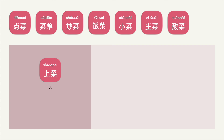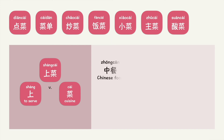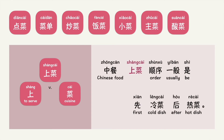上菜. 上 has many meanings — you probably learned 上 translated as on top, upon, above, upper, to get on to, to go up, or to attend. However, in this word it's best translated as to serve. 菜 means cuisine. Put into context, you can say: 中餐上菜顺序一般是先冷菜后热菜。 — To serve cuisine. What do you think 上菜 means? 上菜 means to serve food.